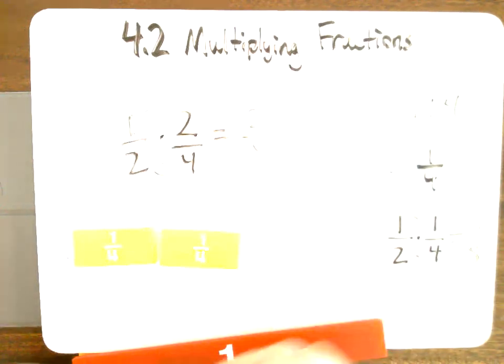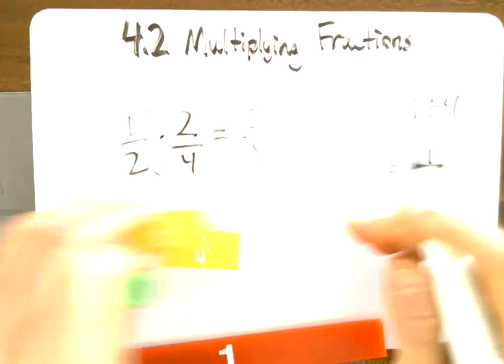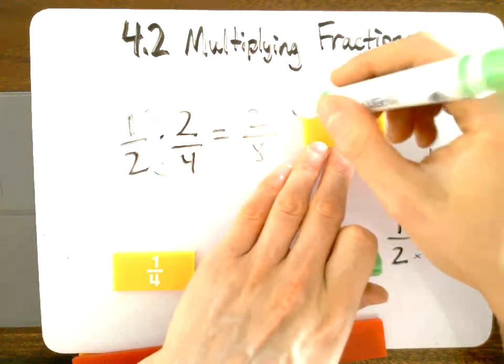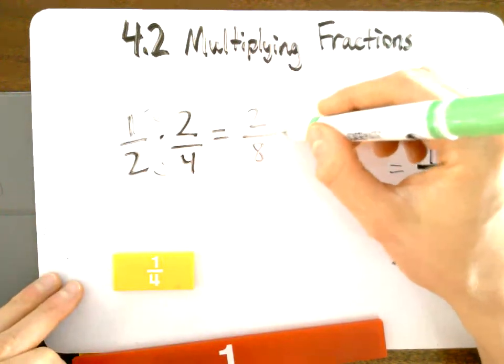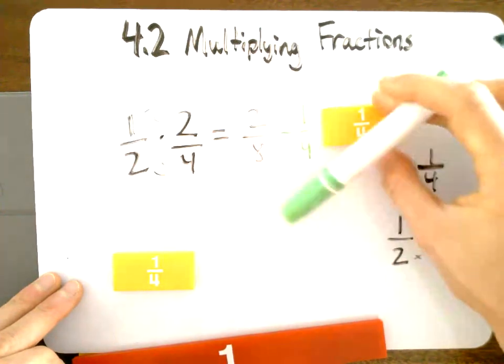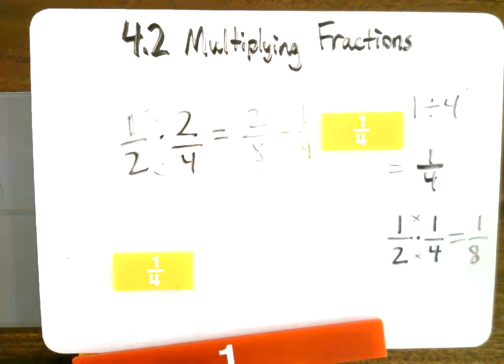And now you're saying, well, Mr. Nelson, that's not 1 fourth, but yes, it is. Remember, we need to simplify, right? 2 eighths, we can divide both of these by 2, a common factor. And we simplify it down to 1 fourth, right? So they are, in fact, equal.